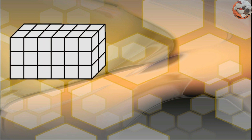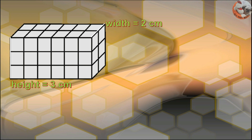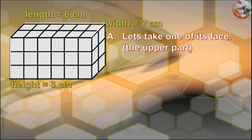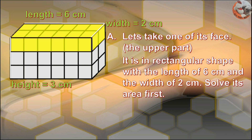Here is a rectangular prism with height equals 3 cm, width equals 2 cm, and length equals 6 cm. Let's take one of its faces — the upper part. It is in rectangular shape with the length of 6 cm and the width of 2 cm.